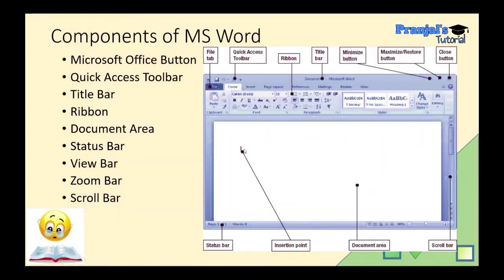For example, if you type 3 words, the word count will show 3. As you type more, the number increases. If the document has 5 words, it will show Words: 5, and if there are 5 pages it will show Page 1 of 5.